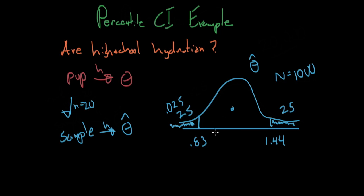And we can construct a confidence interval based on this. Our confidence interval will say, the probability that our theta, the true population parameter, the average high school hydration, is both greater than 0.83 and less than 1.44, will equal to, in this case, because we did 0.025, will equal to 95%, 0.95, or 95%.